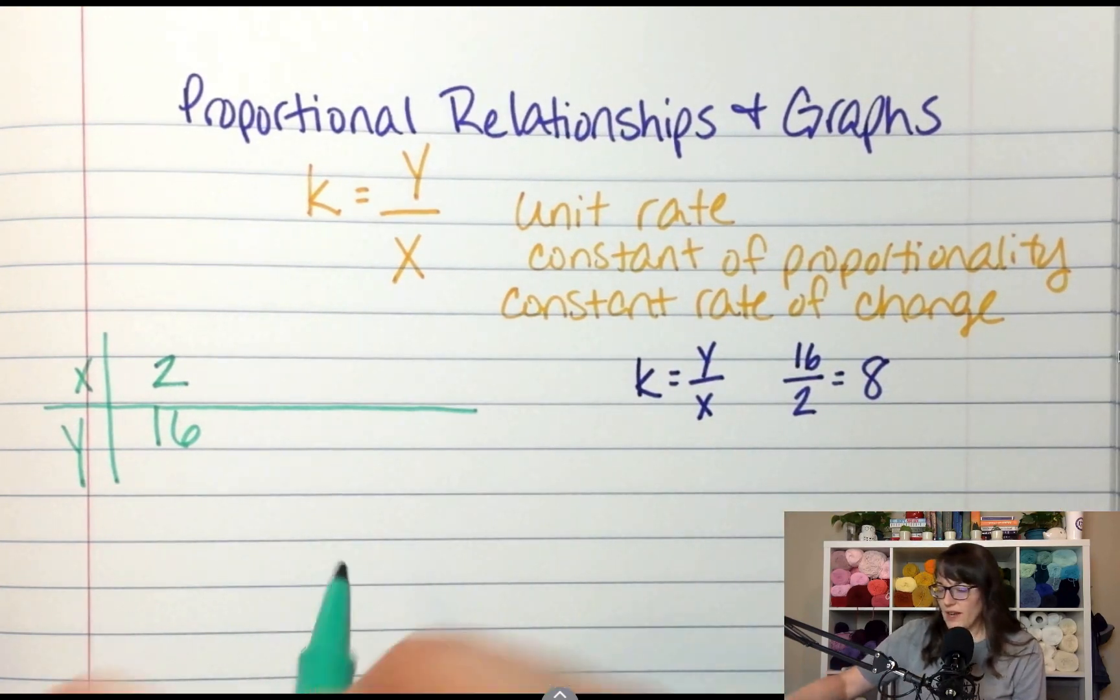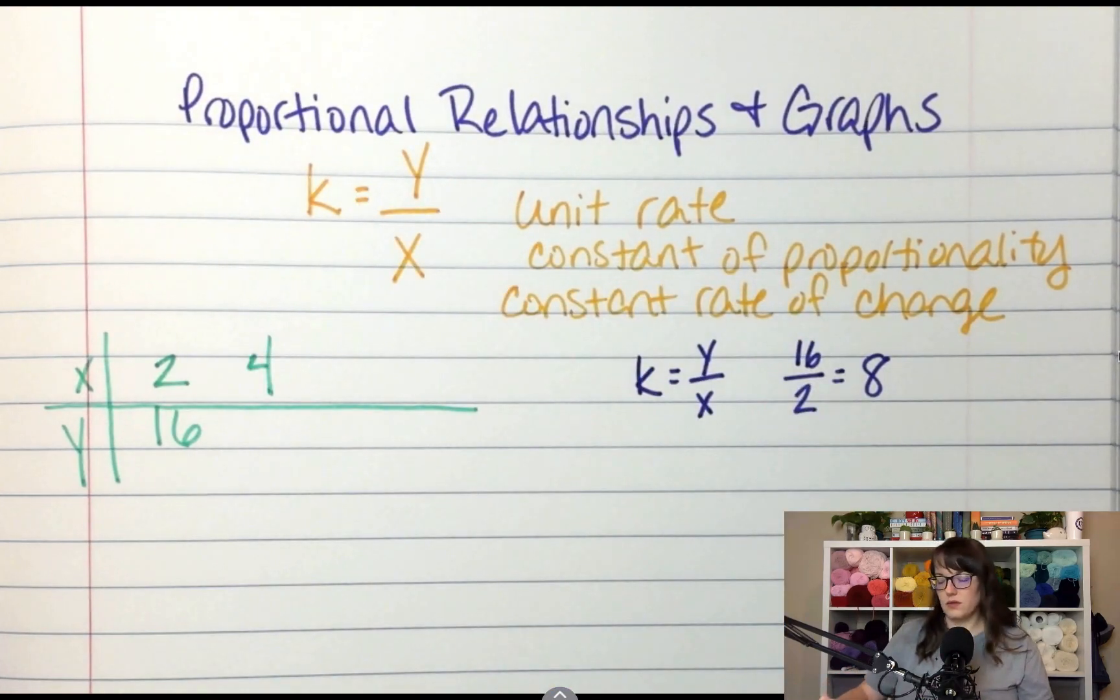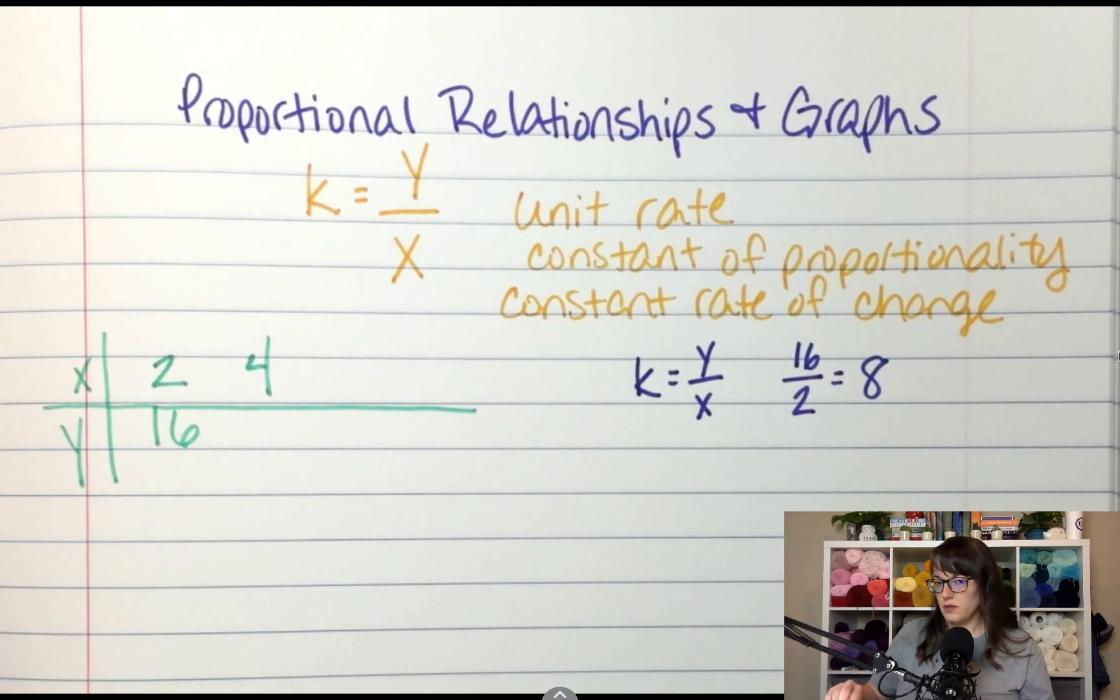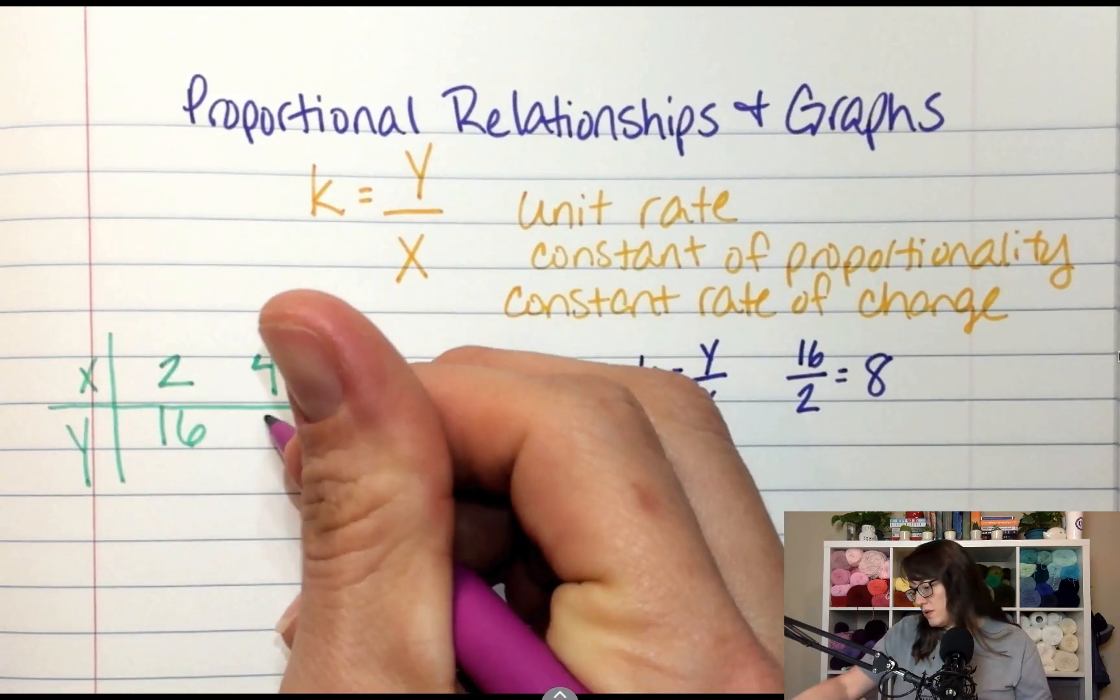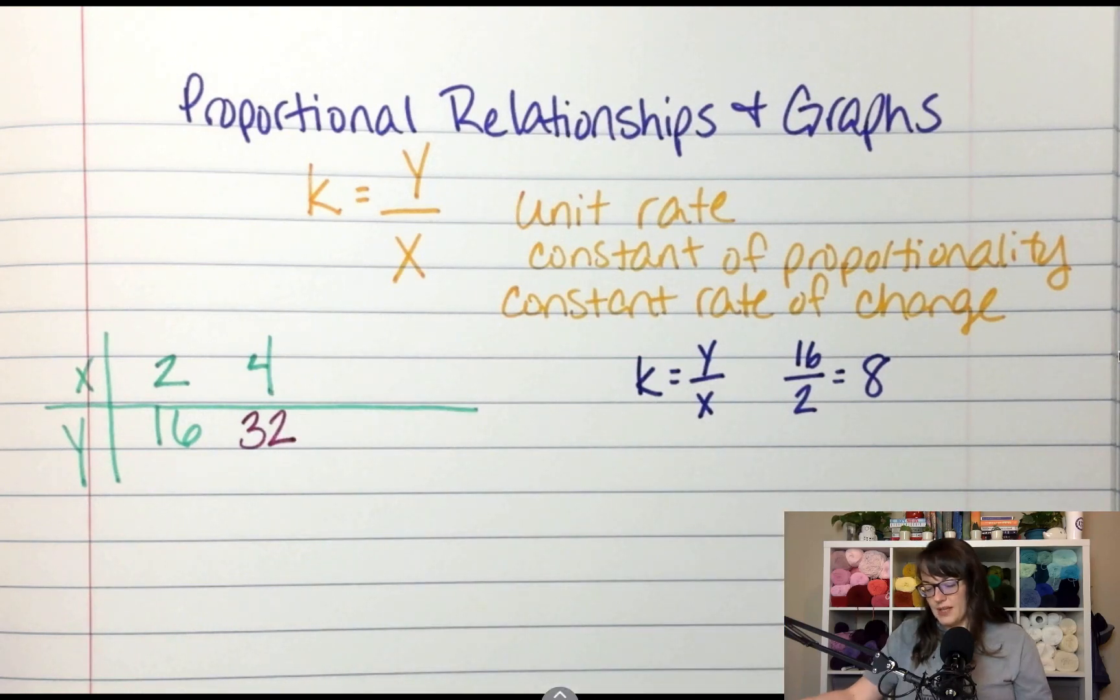So what if I told you I had 4? 4 times 8 is 32. So we got that by doing 4 times the k.